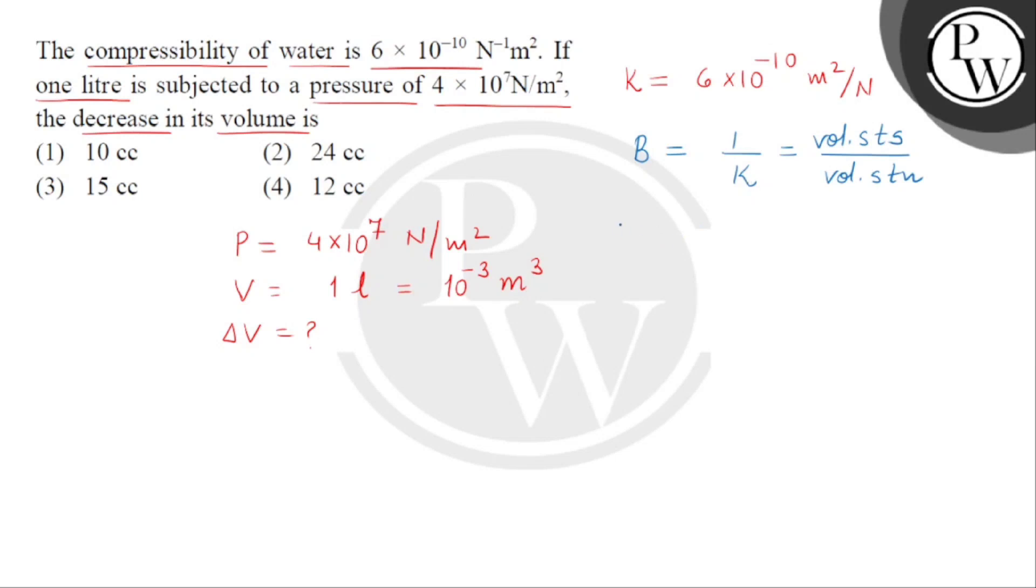Bulk modulus can be written as 1 divided by 6 × 10^-10, which equals volume stress (numerically equal to change in pressure) divided by volume strain (ΔV divided by V). We are taking just the magnitude.